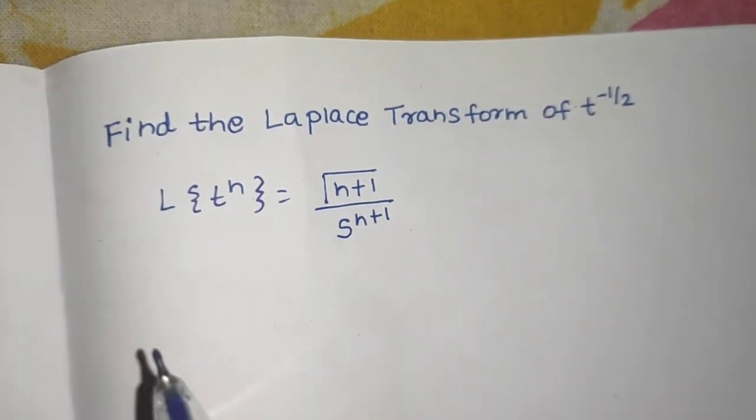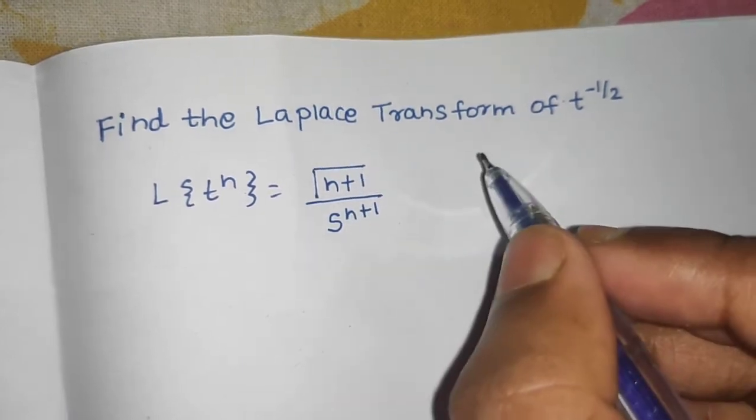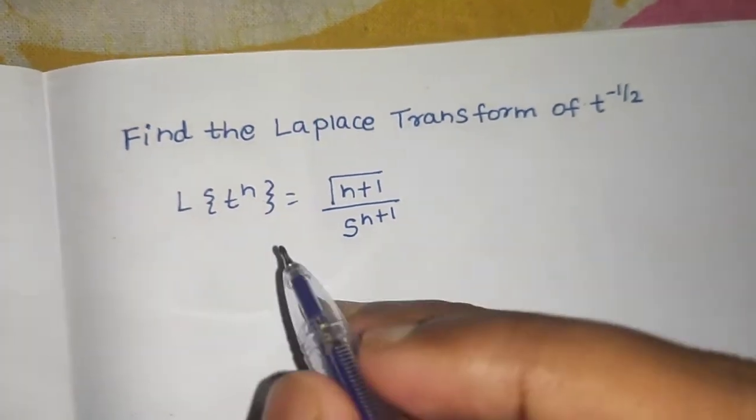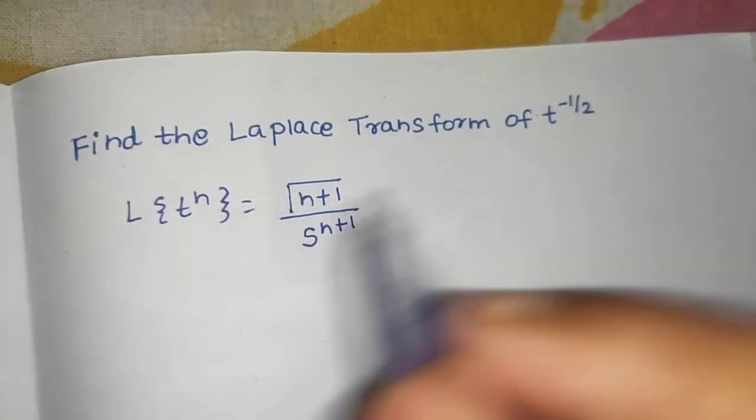If n is a positive integer, then we simply replace this gamma n plus 1 by n factorial in numerator. Here we can easily see that this is a negative and also not an integer.